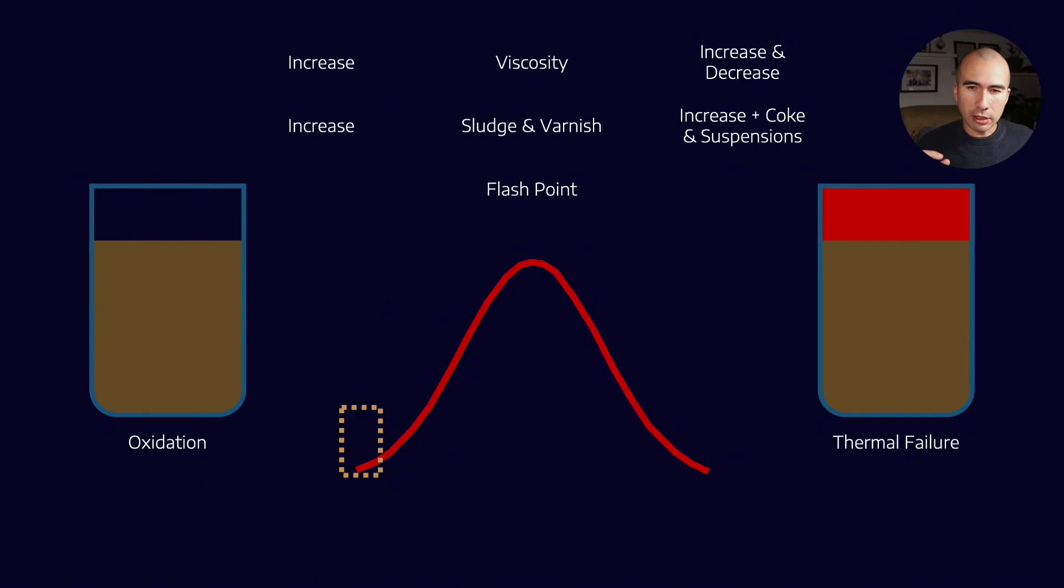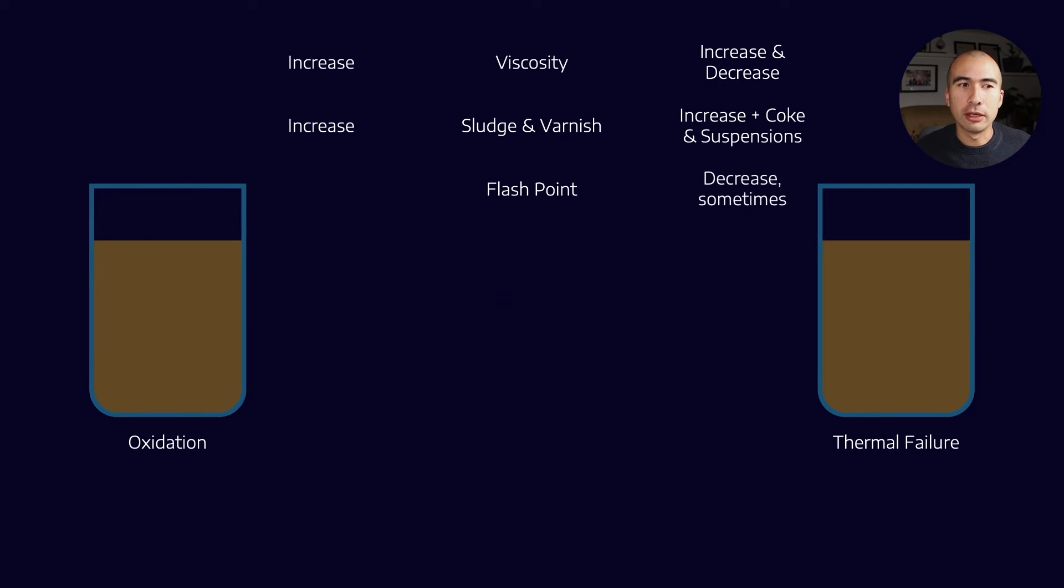Now let's think about what is happening to those molecules under thermal failure. In some instances you are producing even more light ends, because you're taking long chain molecules and you're cracking them, you're giving them so much energy that they break in half and you're making even more volatile compounds. So in that case now my headspace is full of even more volatile compounds which is potentially going to lower the flashpoint, because it means that my oil will flash at a lower temperature.